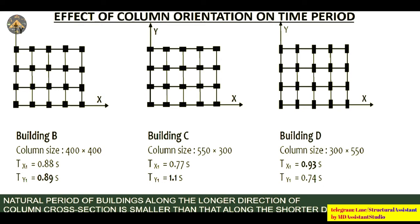Column orientation also affects the time period. The natural period along the longer direction of the column cross section is smaller than along the shorter direction. Building B has square columns, but buildings C and D have rectangular columns of 550 by 300. When the column is oriented along the X-axis, the time period along X is smaller. When oriented along Y, the time period along X is higher and along Y is lower.